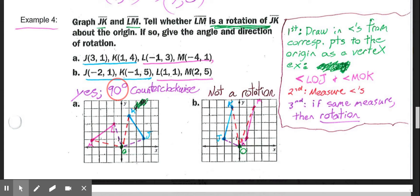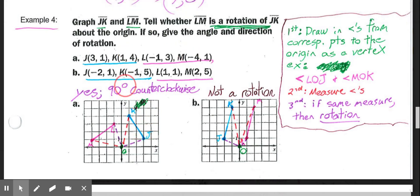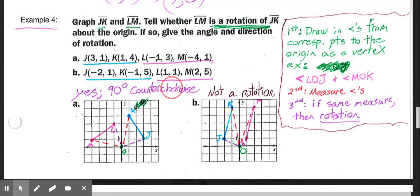In part A, both angles measure to be 90 degrees. Then I have to look at the direction of the rotation, if it's positive or negative, meaning clockwise or counterclockwise. It started at JK and ended at LM. So from JK to LM, it's going this way, so that would be a counterclockwise direction. So it would be a 90-degree rotation counterclockwise.